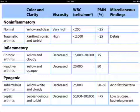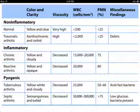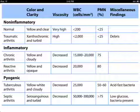Septic arthritis is very important because the management is totally different from other types of inflammatory or non-inflammatory joint pain. Septic arthritis presents with serosanguineous and turbid fluid, decreased viscosity, and WBC count of more than 50,000 — very, very important. PMN is more than 75, glucose is low, and bacteria are present. This is a beautiful table; just go through it once.